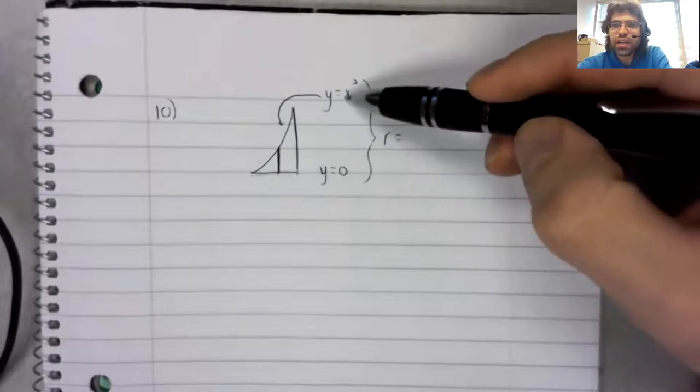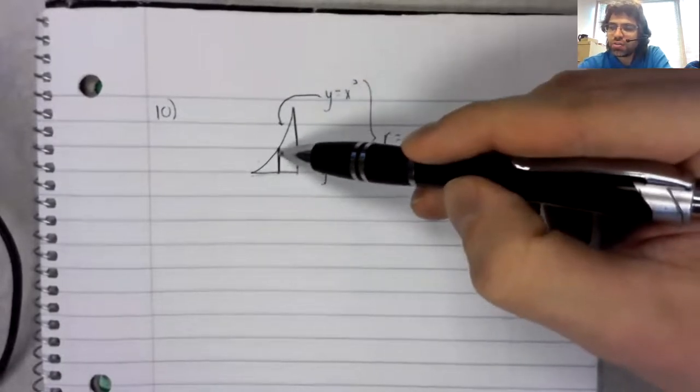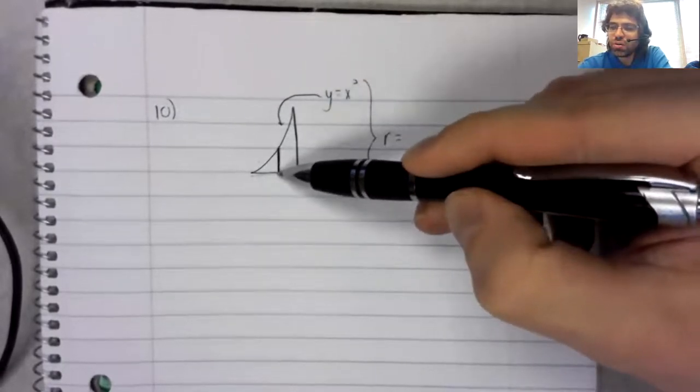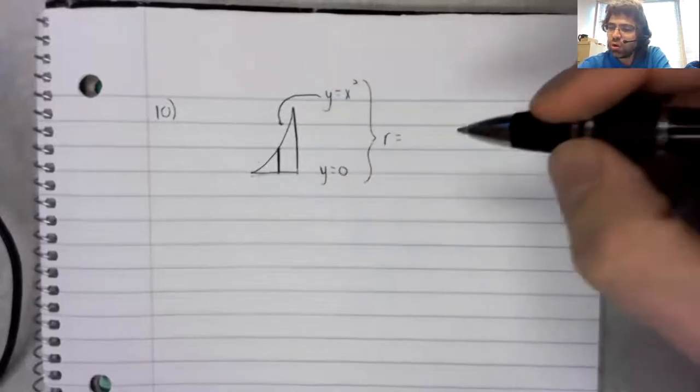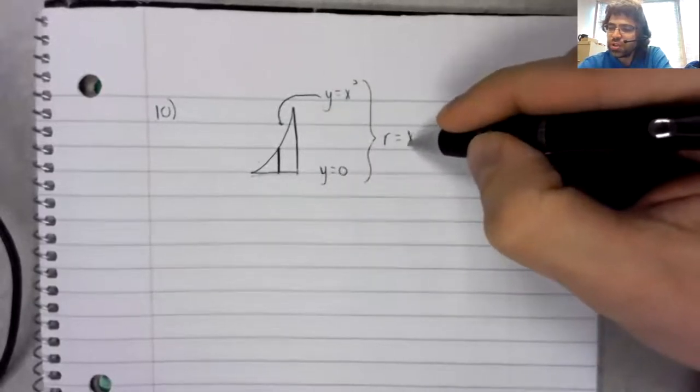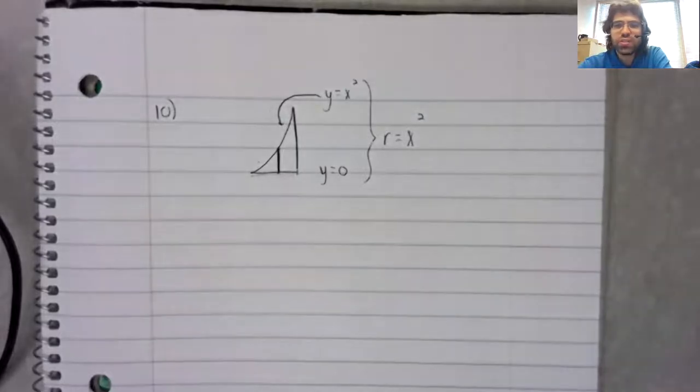the radius, we just subtract to find this distance, the bigger minus the smaller. The radius is x squared.